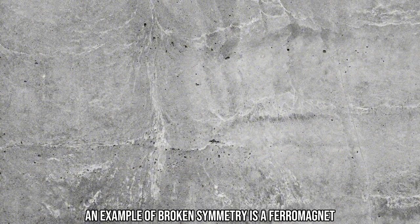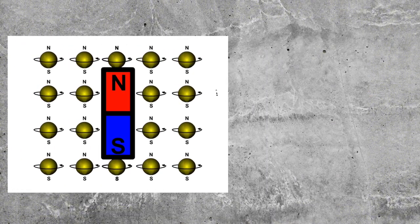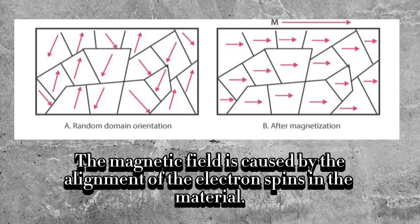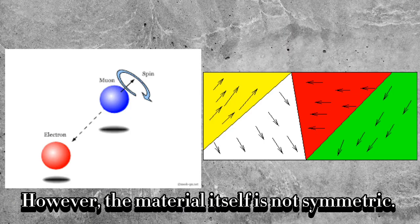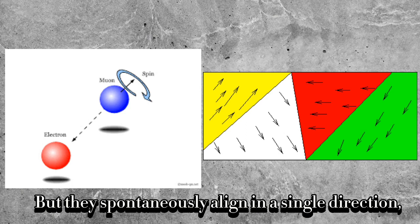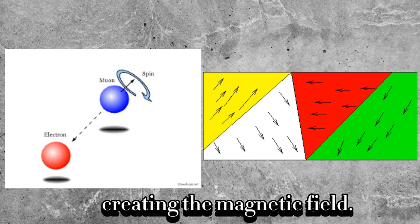An example of broken symmetry is a ferromagnet. A ferromagnet is a material that has a permanent magnetic field. The magnetic field is caused by the alignment of the electron spins in the material. However, the material itself is not symmetric — the electron spins could be aligned in any direction, but they spontaneously align in a single direction, creating the magnetic field.